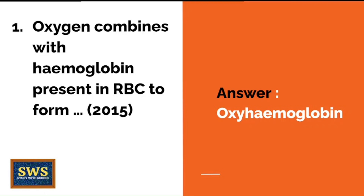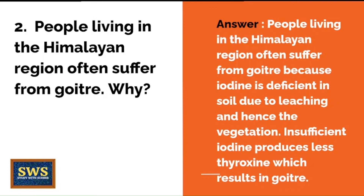From the next question, put a sheet on the right-hand side of your screen. Question 2: People living in the Himalayan region often suffer from goiter. Why? The correct answer is that iodine is deficient in the soil due to leaching, and hence in the vegetation as well. Insufficient iodine produces less thyroxine, which results in goiter.